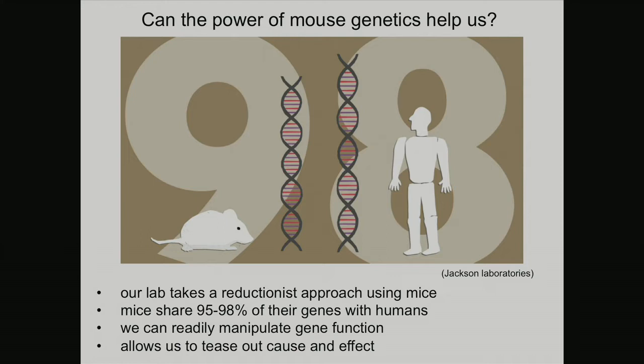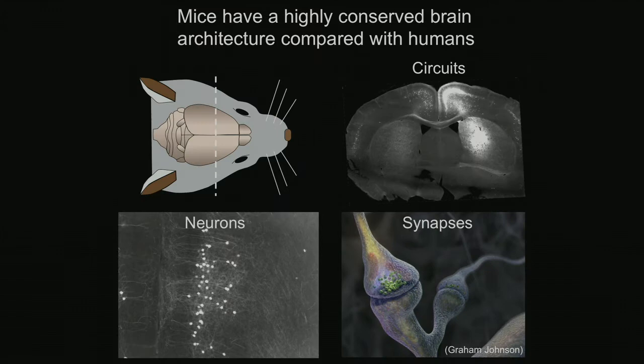Because we can make these genetic manipulations and perturb the system, we can sometimes really tease out cause and effect. But is the mouse brain similar at all to the human brain? If we peer into a mouse brain, we can see that most of the same brain regions are represented. The connectivity from the anterior cingulate cortex into the striatum is the same in a mouse as it is in a human.